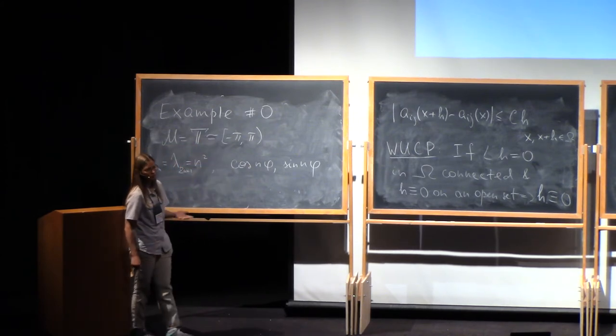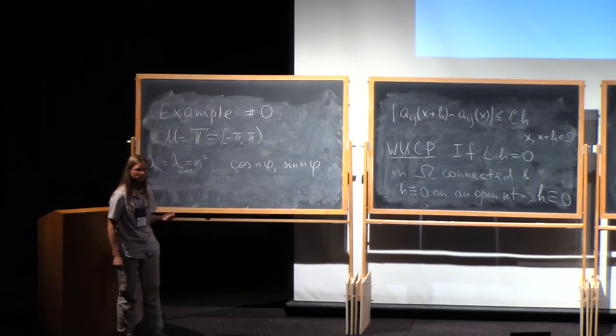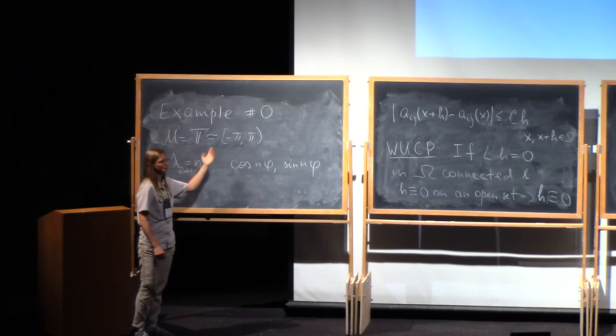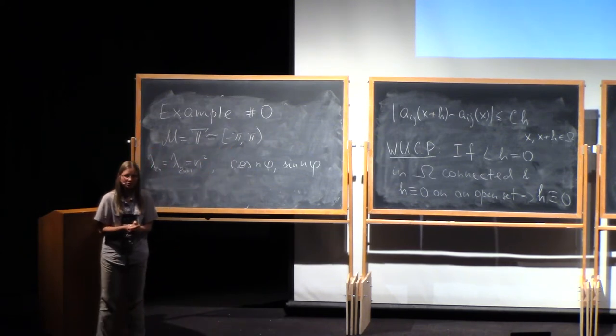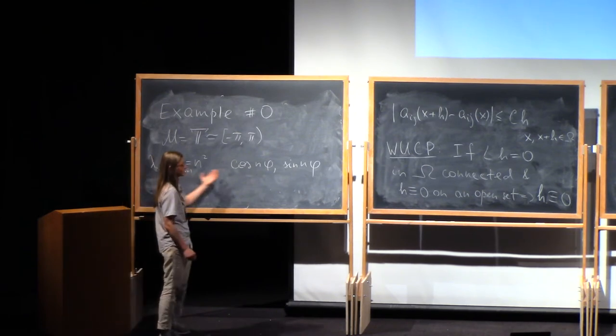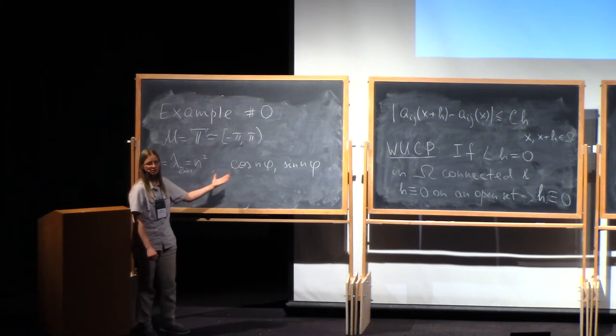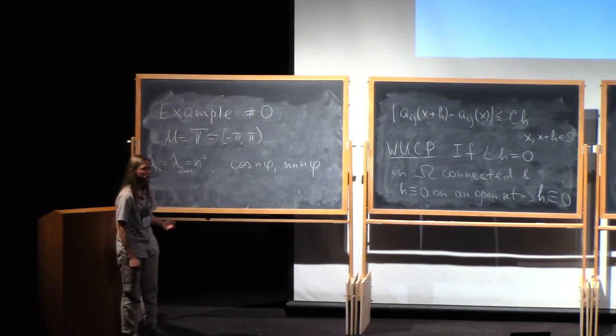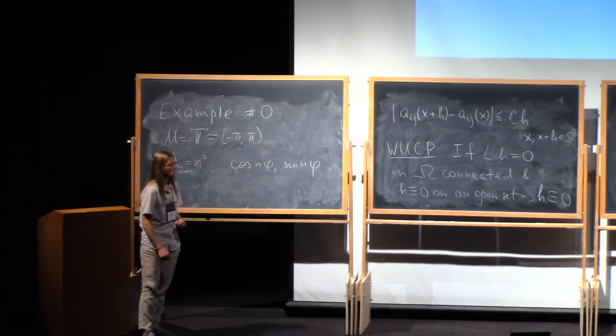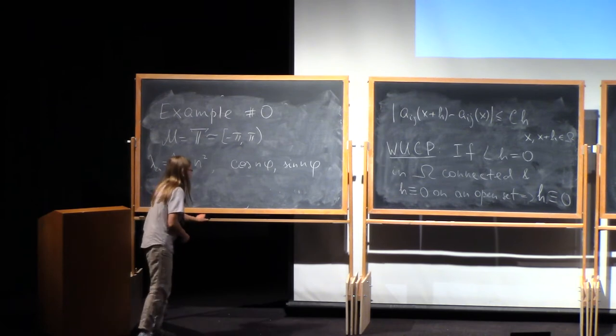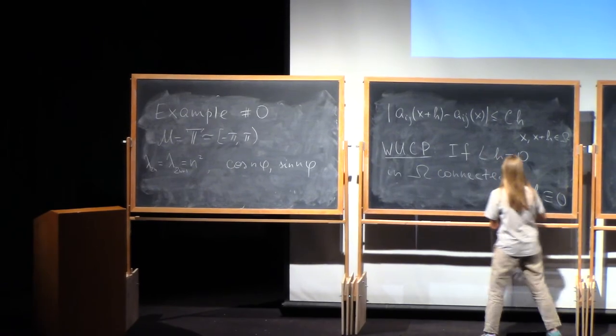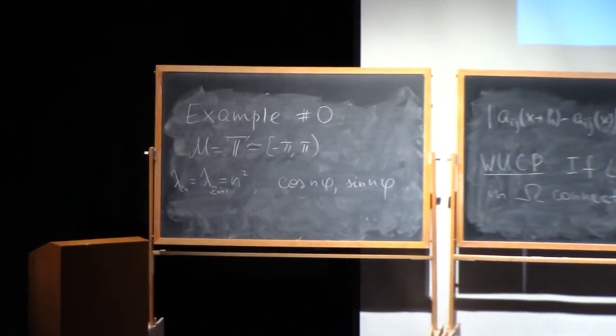This is a very trivial, simple example. For example, you can change it a little bit, change the metric on the torus. Introduce another metric, not the uniform one. And you'll get a standard Sturm-Liouville operator, for which the Sturm theory says that you have the same phenomena. You have still n zeros of eigenfunction of number 2n and 2n plus 1. I won't write it down, but it's a relatively well-known thing.